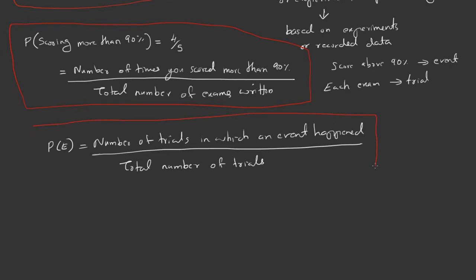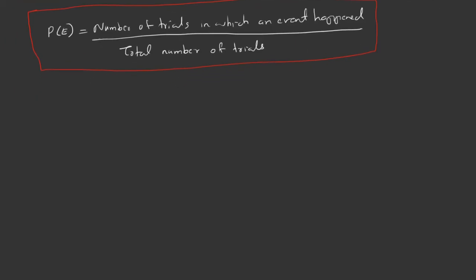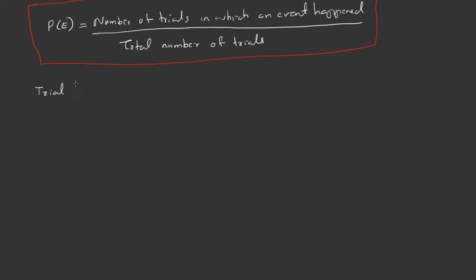This equation can be used to calculate the probability of an event. We come across terms like event and trial. We are going to understand three terms commonly used in probability: event, trial, and outcome. First, trial or experiment. We consider exams as trials—actions from which we get an outcome. So a trial is an action which results in one or several outcomes.